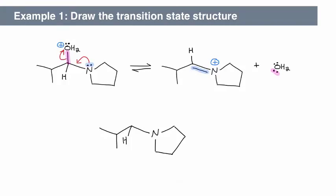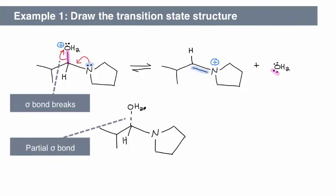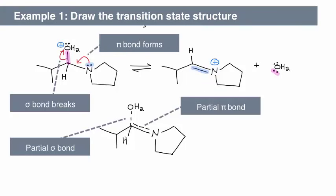Now draw dashed lines for any bonds that break and form during the reaction. These represent partial bonds. For example, the leftmost curved arrow indicates that the carbon-oxygen bond is breaking, so we draw a partial sigma bond in the transition state. The rightmost curved arrow indicates that a carbon-nitrogen pi bond is forming, so we draw a partial pi bond in the transition state.